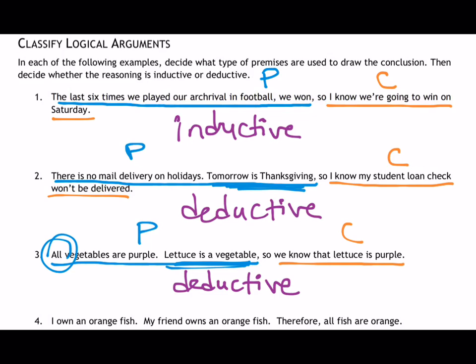And then finally, number four: I own an orange fish. My friend owns an orange fish. Therefore, all fish are orange. So we're starting with the premises — some specifics, some evidence — two examples of fish that are orange. And then we have a jump to a general statement: because two fish that we can think of are orange, that must mean all fish are orange. This is a fairly weak argument, but we're concerned about what type it is rather than whether it's strong or weak. This is an inductive argument. We're gathering a very limited amount of evidence and making a general assumption about what would be true for all fish based on that limited evidence.